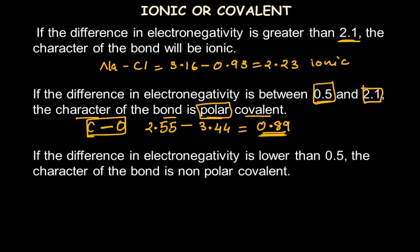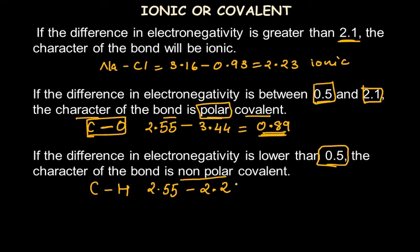If the electronegativity difference is lower than 0.5, the bond is a non-polar covalent bond. For example, carbon (2.55) and hydrogen (2.2) have a difference of 0.13, which is less than 0.5, so the carbon-hydrogen bond is non-polar covalent. In this way, the Pauling scale helps predict whether a bond is ionic, polar covalent, or non-polar covalent.